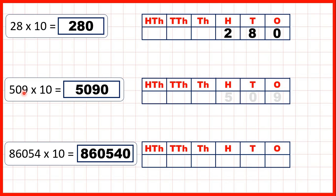Then we started with 509 and when we multiply by 10 the digits move one place value to the left. We need to write a zero in our empty ones column so all of the other digits are in the correct place value column and our answer is 5090.